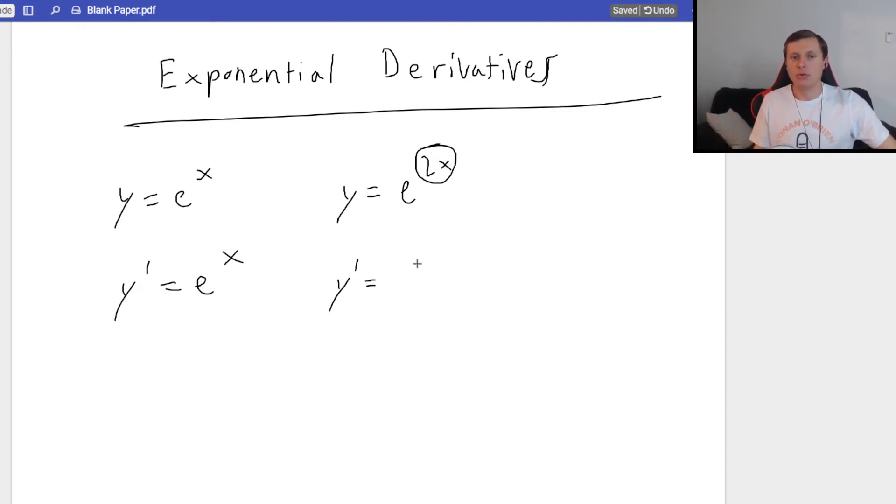So my overall derivative is going to be 2e to the 2x power. This is not a power rule, I repeat, this is not a power rule. We did not subtract 1 from the exponent. We took the derivative of the exponent, put that in front, and then multiplied it by the original function. That's how you take the derivative of exponential functions.